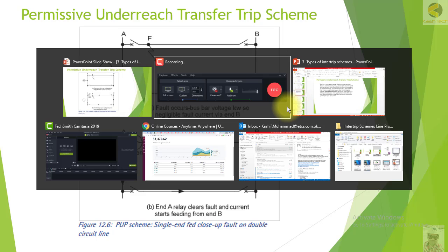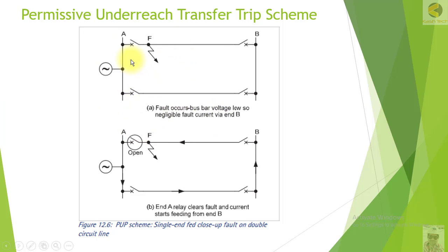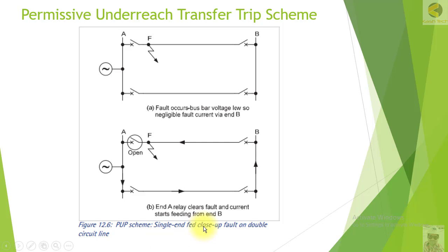This example shows a generating source at one end only. If there is a fault nearest to Station A, the fault will be fed by Station A because this is the shortest path, and there will be negligible current through Station B since that path is very long. Once the breaker at A opens, fault current will then be fed from Station B. This is the PUTT scheme example with single-end infeed on a double circuit line.